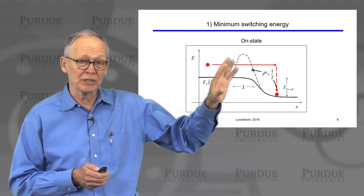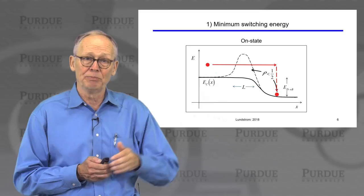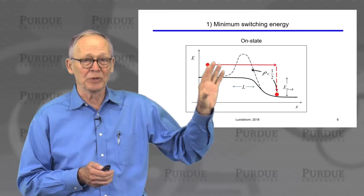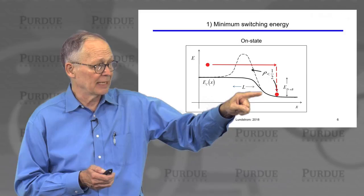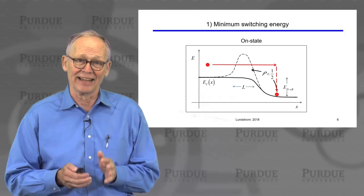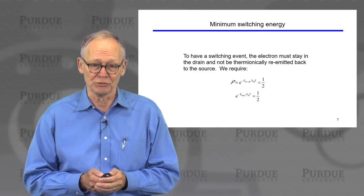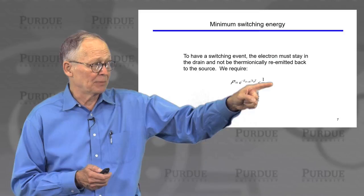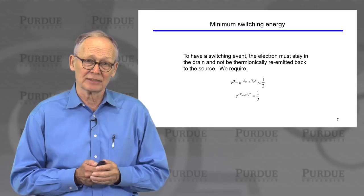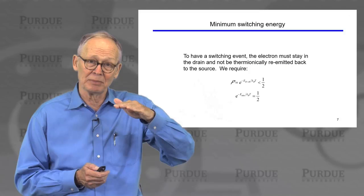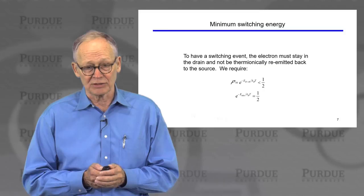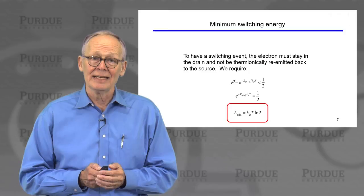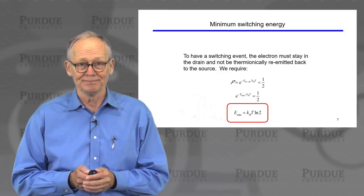If we have a switching event, we have to ensure that when electrons get into the drain, they can't be thermionically emitted and go back over the barrier into the source, or else a switching event has not occurred. So from a fundamental perspective, we require that the probability that an electron is thermionically emitted over that barrier and goes back to the source must be less than one-half, so that a switching event did occur. We know the probability of thermionic emission over that barrier is e to the minus barrier height over kT, and that probability must be less than one-half. The minimum is when the probability equals one-half.